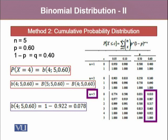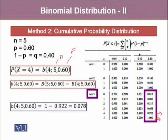In our example, when N equals 5, P equals 0.60, and 1 minus P, which is Q, equals 0.40. If we want to find out the probability of b(4, 5, 0.60), where 5 denotes the number of possible outcomes and 0.60 denotes the probability of success, we will take the cumulative probability from 5 and subtract the cumulative probability for 4 successes. That is 1 minus 0.92, and it gives us 0.078, which we could have also obtained using the probability mass function or the table for the probability mass function.